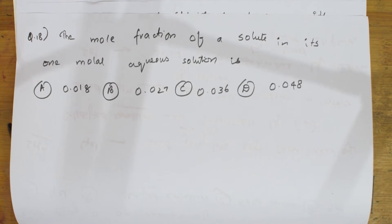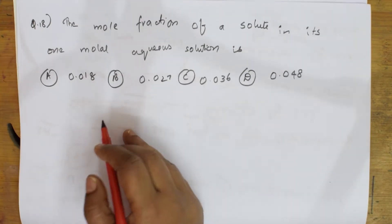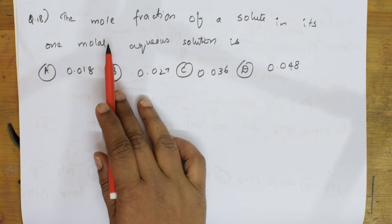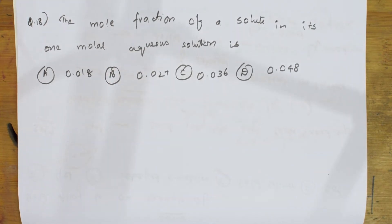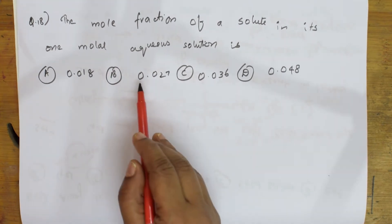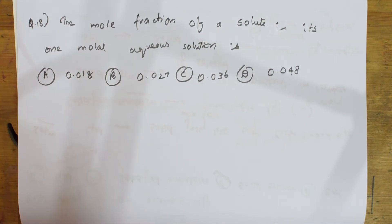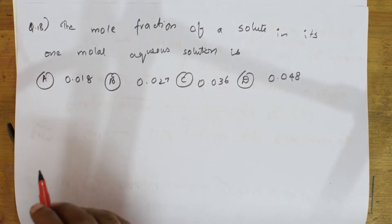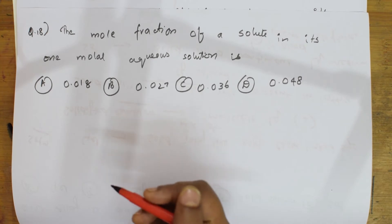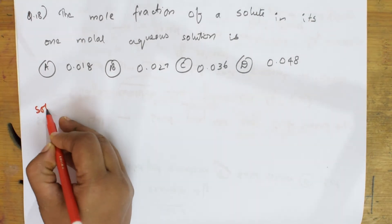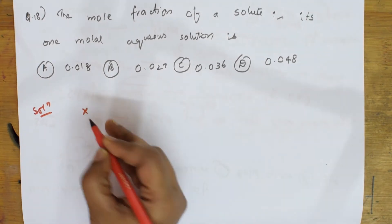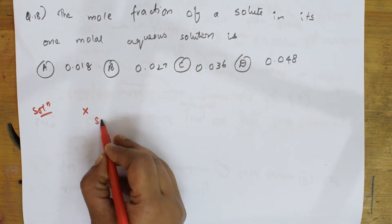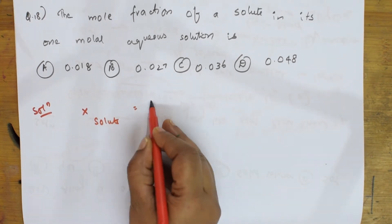After the surface chemistry question where we spoke about gel, solidified emulsions, solid solution, and sol, let us come back and do the next question. This is basically from the solution chapter. They said the mole fraction of a solute in a one molar aqueous solution is — we have to find the mole fraction. Mole fraction is denoted by X, and I have to find it for the solute.